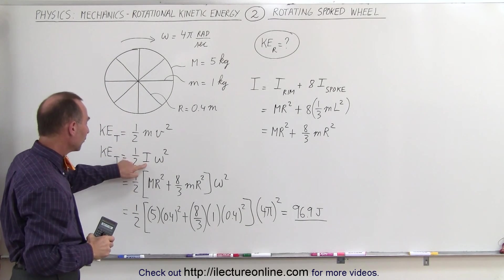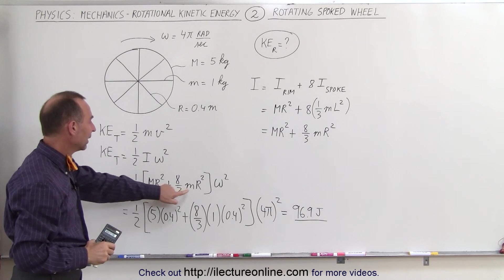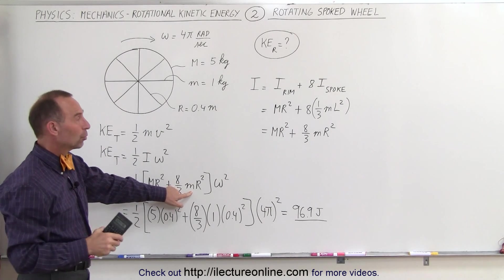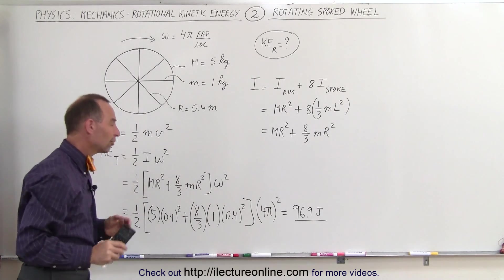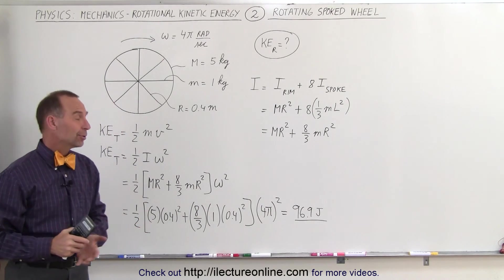We have to find the moment of inertia, first of the rim, then of each of these spokes, which is 1/3 ml² times 8 because there's 8 spokes, and we multiply times omega squared, and that's how we do that.